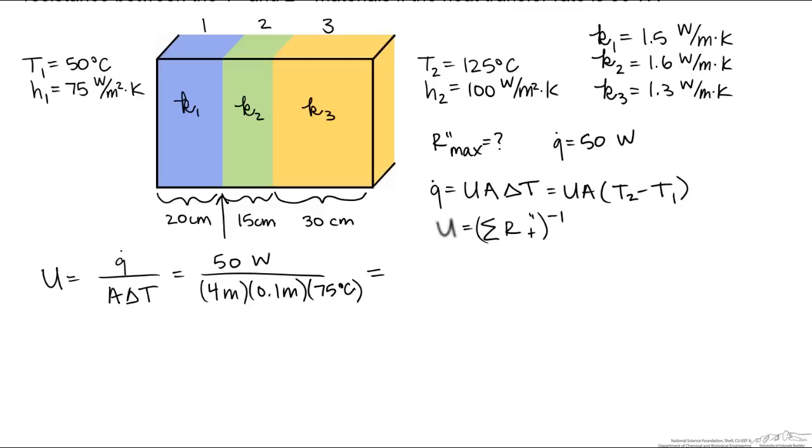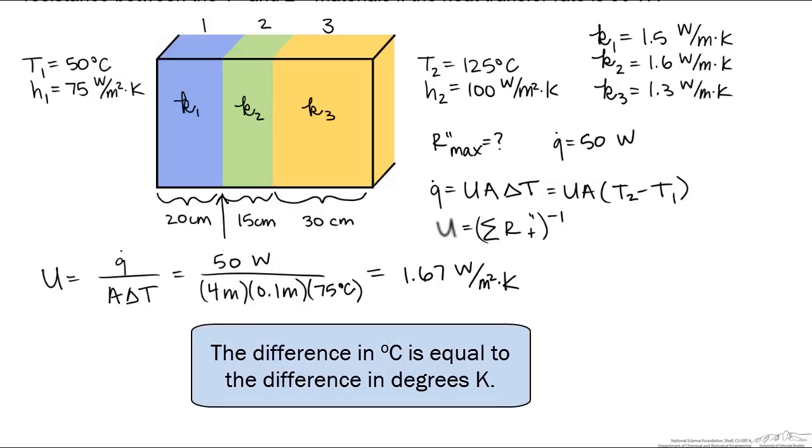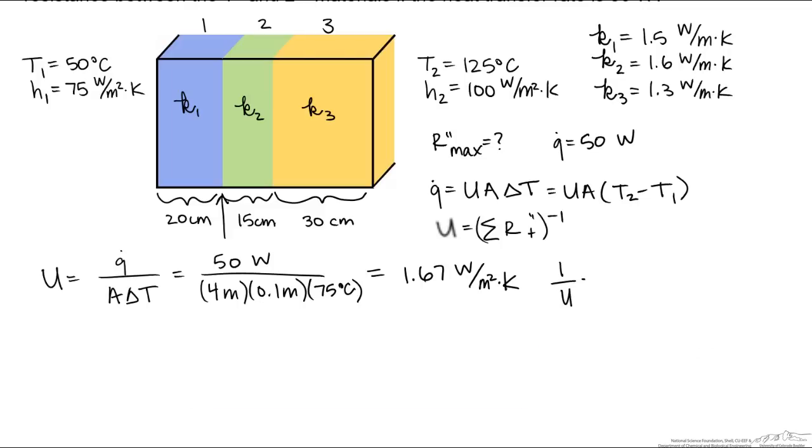We can rewrite U as the heat transfer rate divided by the area times delta T. And when we calculate that U, we find out that it is equal to 1.67 watts per meter squared Kelvin. But U also equals the inverse of the sum of the resistances.